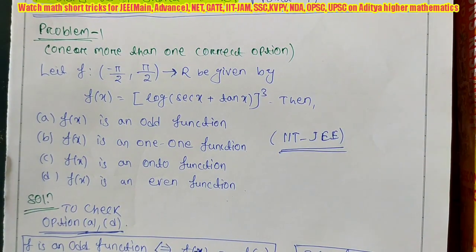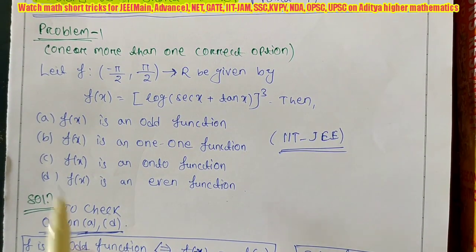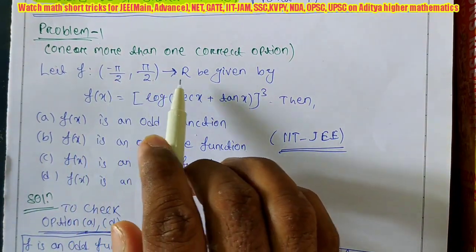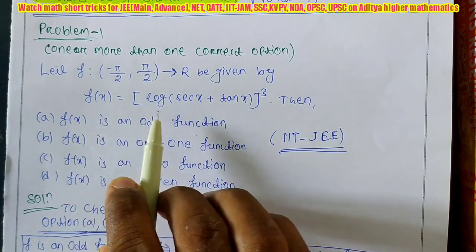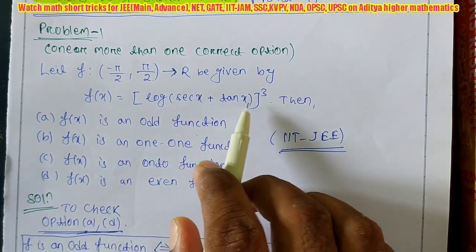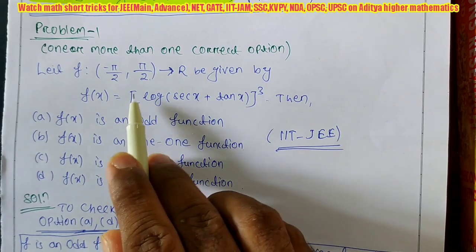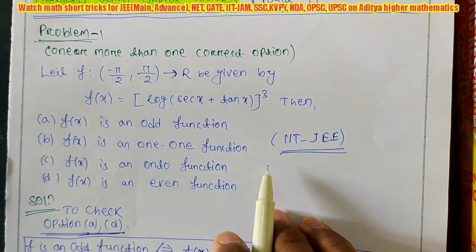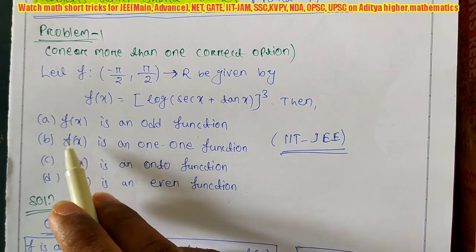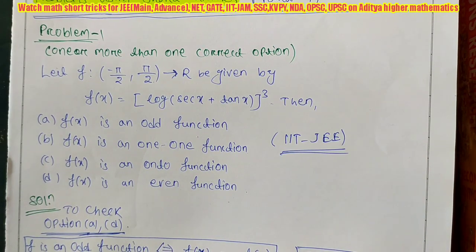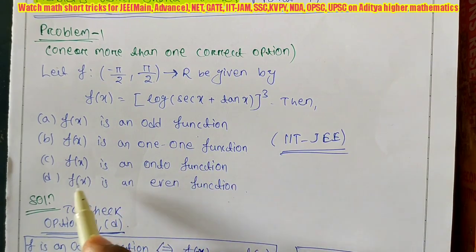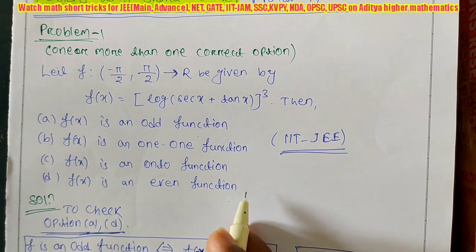The first time I am solving a more-than-one-option problem here. One function is given: f from the open interval (-π/2, π/2) to ℝ, where f(x) = log(sec x + tan x)³, meaning the entire logarithm is raised to the power 3. Then which options are correct out of the four? The options are: (A) f(x) is an odd function, (B) f(x) is a one-to-one function, (C) f(x) is an onto function, (D) f(x) is an even function.